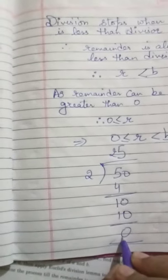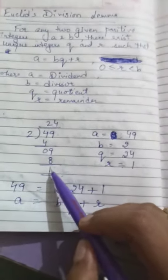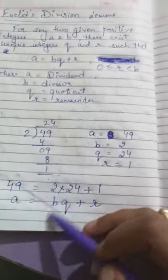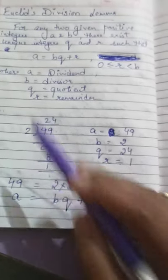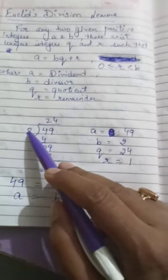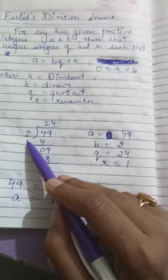So either your remainder will be 0 or it will always be less than the divisor. If your remainder is greater than the divisor, you continue your division. Suppose it was 3 here; then you would have further divided it, and your division will always stop when it is less than your divisor.